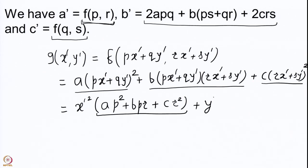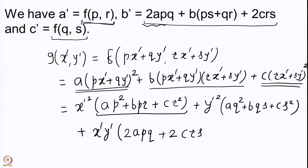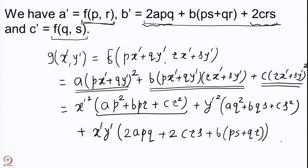Similarly, C' = F(Q, S) = AQ² + BQS + CS². Now we compute the coefficient of x'y'. The contribution from the first term is 2APQ, from the last term is 2CRS, and from the middle term is B(PS + QR). So B' = 2APQ + B(PS + QR) + 2CRS.